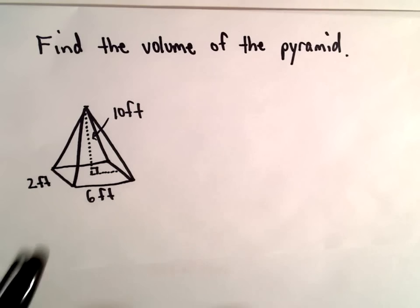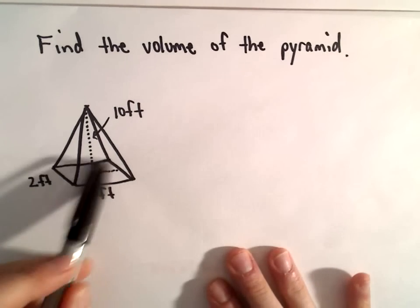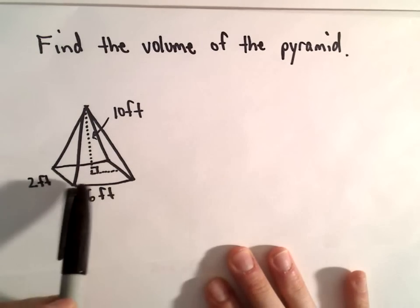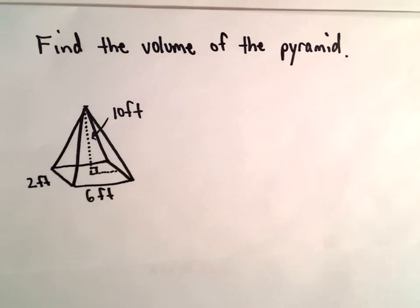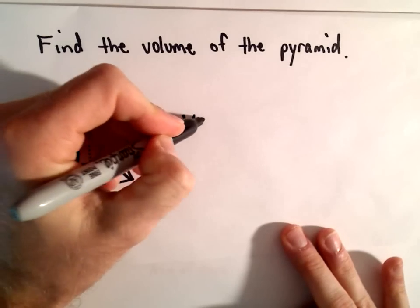So here we're going to find the volume of a pyramid. It's got a rectangular base with dimensions of two feet by six feet and then a height of ten feet. So I'll put my units in there at the end.